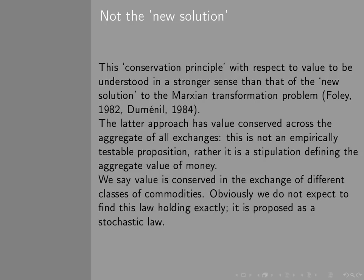What I'm saying is that value is conserved in the exchange between different classes of commodities. Obviously, you don't expect to find it holding exactly. Like many scientific laws, it has a stochastic character. There's some random fluctuation around it. But what we're saying is that if you look at distinct industries or sections of the economy, the value of their outputs will tend to be proportional to their labour content. And it won't be proportional to, for example, their rubber content or their steel content.